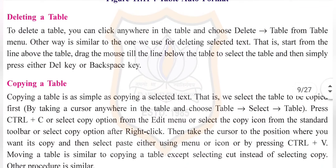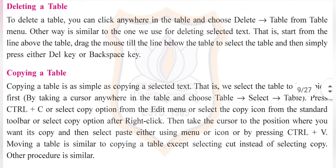Deleting a table: To delete a table, you can click anywhere in the table and choose Delete Table from the Table menu. Another way is similar to the one we use for deleting selected text. Start from the line above the table, drag the mouse till the line below the table to select it, and then simply press either the Delete key or Backspace key.